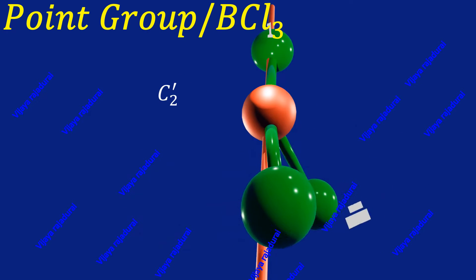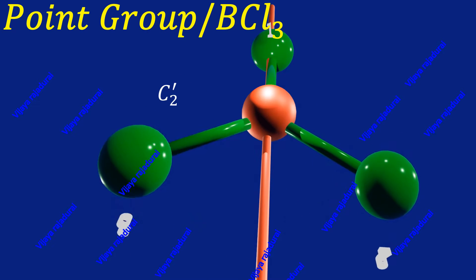Here you can see the C2 orientation about the first chlorine atom and boron atom.